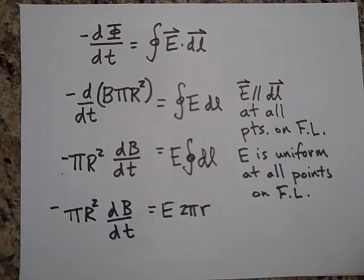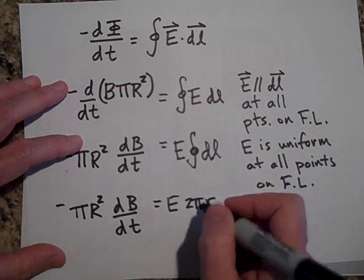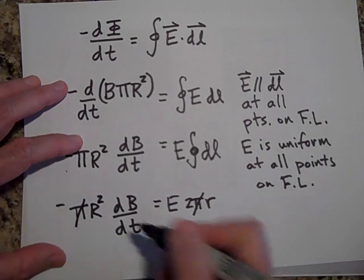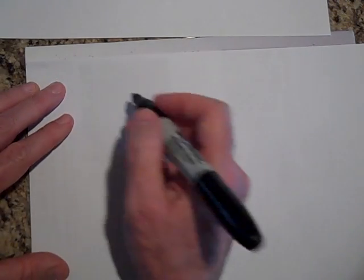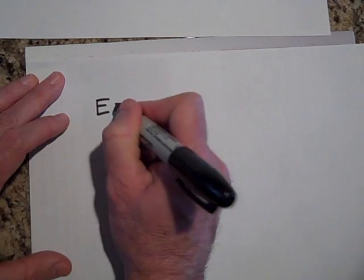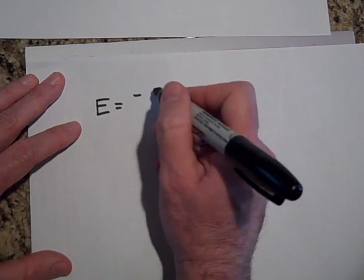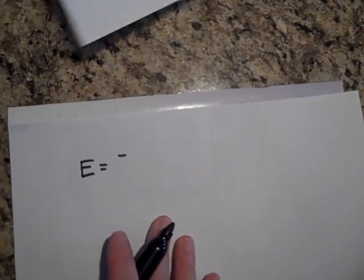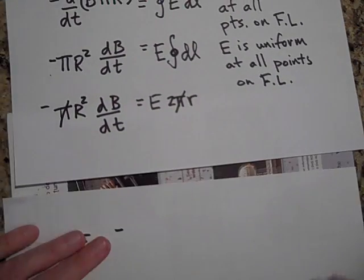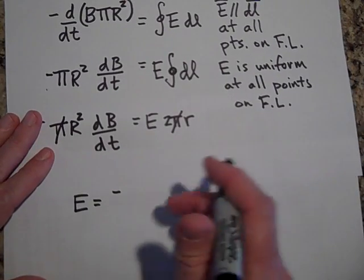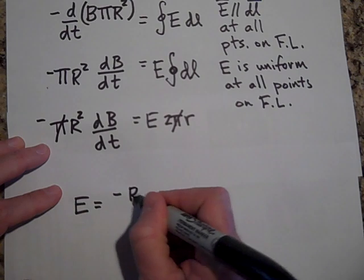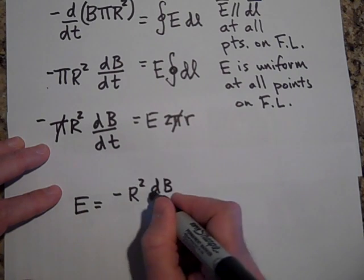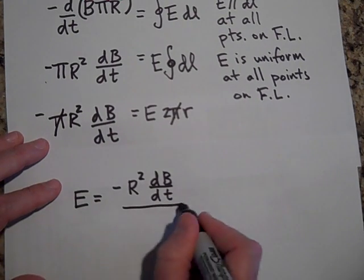Let me cross out a pi and bring the two r on the other side. So the electric field is going to be equal to negative r squared dB dt all over two r. These are constants. Let's say that the rate at which dB is changing with time is a constant.